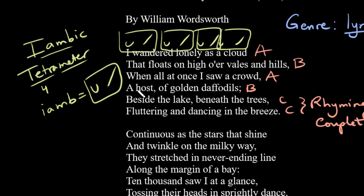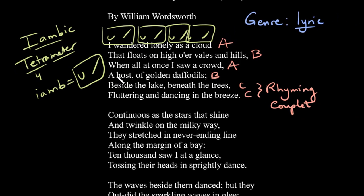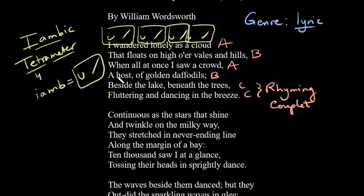Why does William Wordsworth use iambic tetrameter? Well, these are fairly short lines, and the iambic pattern creates a fairly natural and flowing form. It's not harsh, it's not an unusual rhythm — it's just a very nice, easy, flowing rhythm with short lines. This is not iambic pentameter, which is what you would see in a sonnet. It's something fairly short and lyrical that allows the poet to express his emotions naturally.